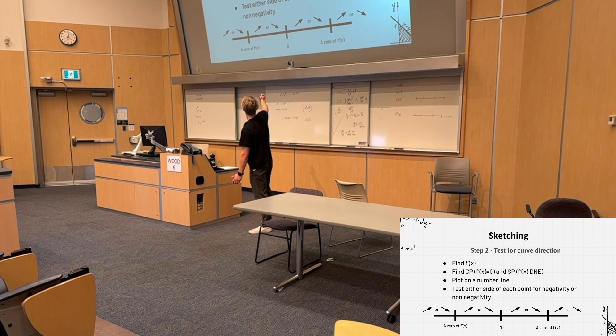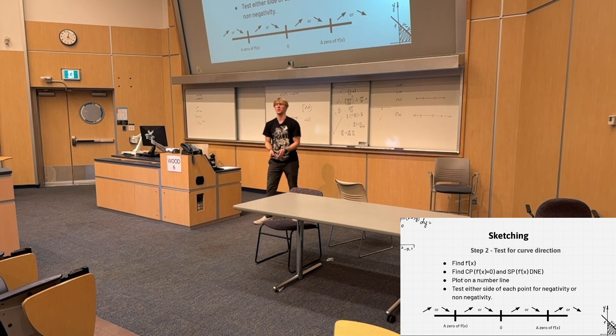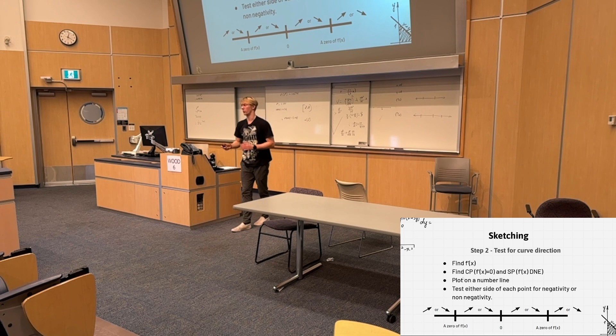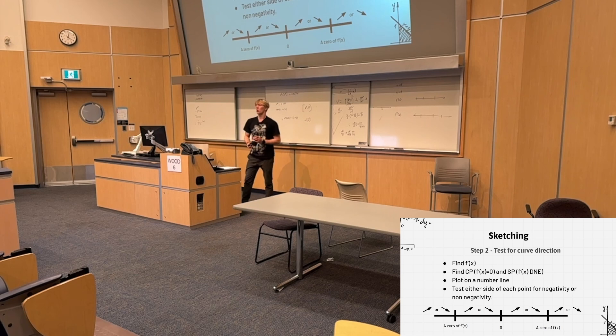So make sure, also don't forget, where the derivative does not exist can be a local extrema. So make sure you're putting that on your number line. It's not just where the first derivative is zero. It's also where the first derivative does not exist. Once you determine that, that's where the function is increasing or decreasing.